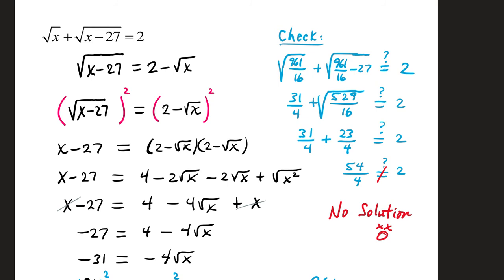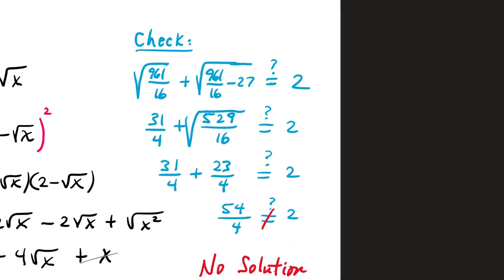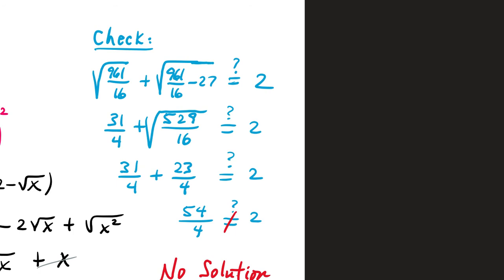Remember that you don't always get to keep your answers. With square root equations, you have to check them. So in the original problem, I came over here to the side, and I was substituted in 961 over 16 in place of x. So we have square root of 961 over 16, which is 31 over 34. 961 over 16 minus 27. That's 529 over 16. That has a perfect square root of 23 over 4. Now see, this is all supposed to equal 2 by the end of it, but at this point, when we add, we have 54 over the common denominator of 4, which is 27 over 2. That's 13 and a half. That is not 2.